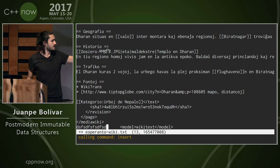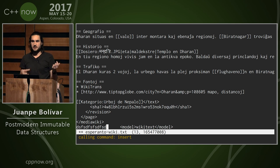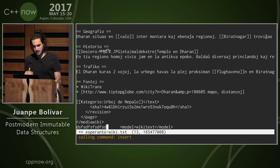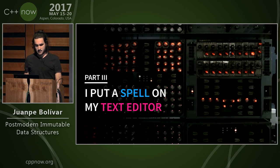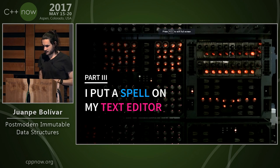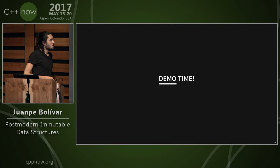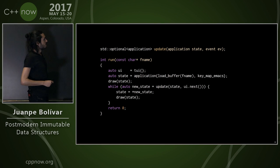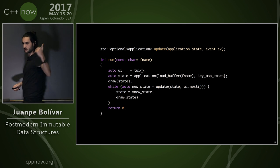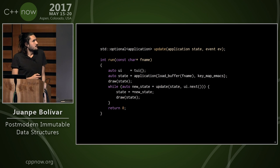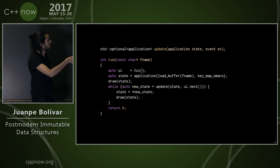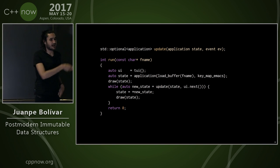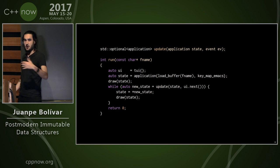The whole code of the text editor is 1,000 lines including terminal handling, and it's online. This is actual code taken from the source on GitHub. The most important part of the application is the update function. Its signature takes an application as a value — the whole application — and an event as a value (e.g., the key you pressed and the window size), then returns a whole application wrapped in an optional, where empty signals the application is done.